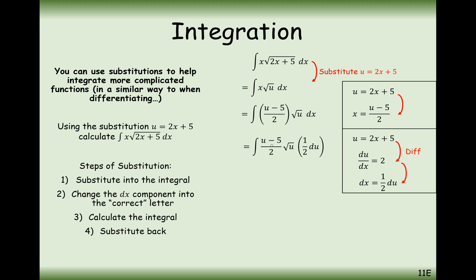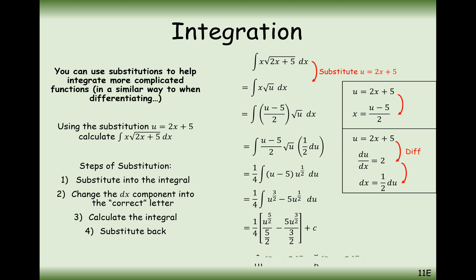In this question we've got a half on the bottom here and a half inside this du. We can effectively factorise out a quarter to take these fractions out, which helps simplify the problem. We'll turn the square root of u into u to the power of a half and expand the brackets. Now we can integrate these components separately: u to the 5 over 2 divided by 5 over 2, minus 5 times u to the power of 3 over 2 divided by 3 over 2. Simplifying the fractions and substituting u back in gives the final answer.